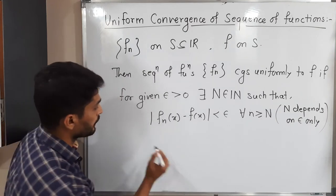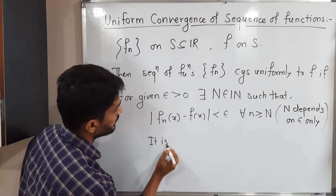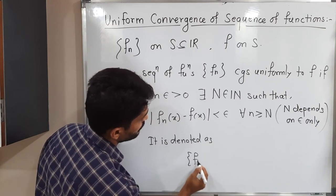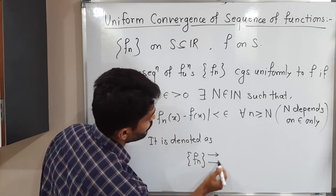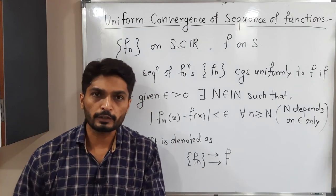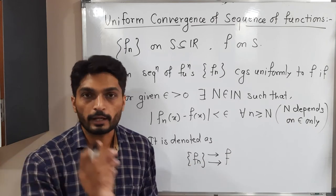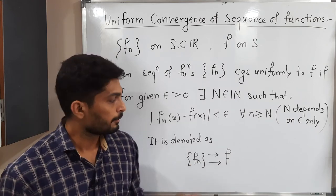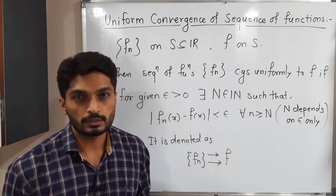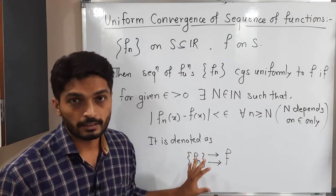It is denoted as: sequence of functions fn converges uniformly to f, we write in this way. When we say it is point-wise convergence we draw only one single arrow, but in case of uniform convergence we draw two parallel arrows. So this is the way we represent it.